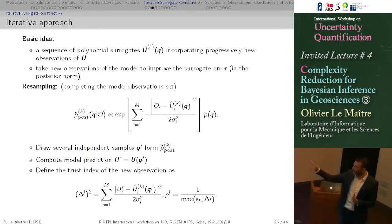Once we have this new surrogate, we plug it into the likelihood. So it's now the posterior, at the kth step of the iterative scheme, where we have this likelihood given with this approximated surrogate. We can draw several independent samples from this posterior distribution. So this is the stage where we complete our set of design points. We evaluate for these new samples the exact model, and now we can define the trust index by comparing what is the actual value of the complete model with respect to the value predicted by the current surrogate.